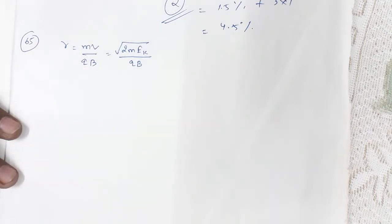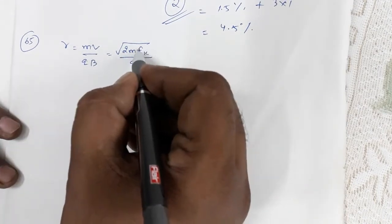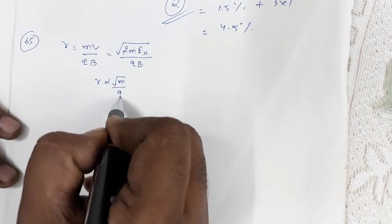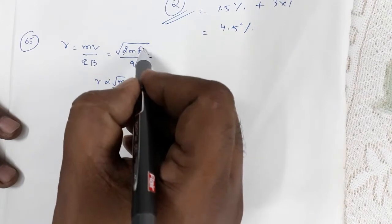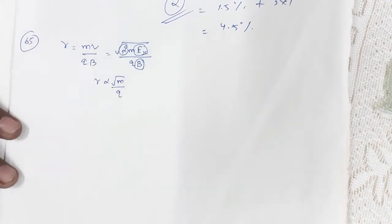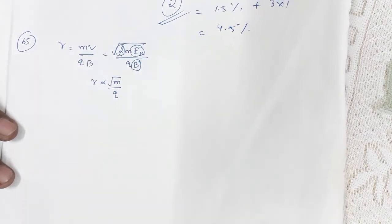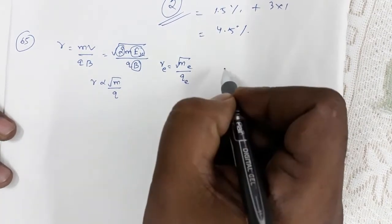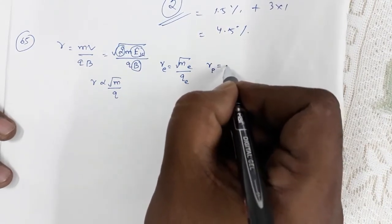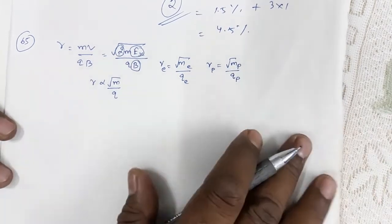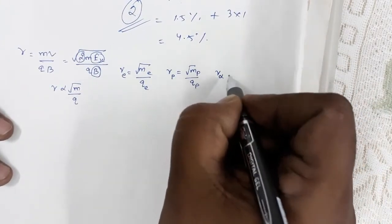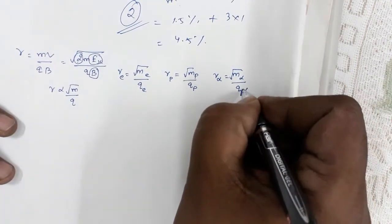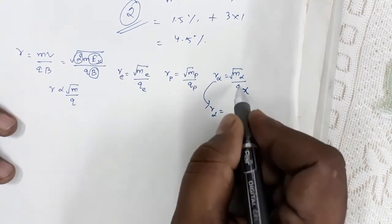All particles have the same kinetic energy, so 2 and Ek are constant. Since all particles move in the same magnetic field, B is also constant. Therefore r is proportional to √(m/q). So: r_e = √(m_e/q_e), r_p = √(m_p/q_p), and r_α = √(m_α/q_α).